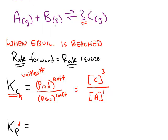B is special because B is a solid. Solids and liquids do not appear in K. Pure solids and pure liquids have a constant concentration, therefore we do not include them in the equilibrium constant.